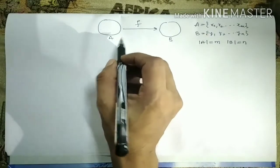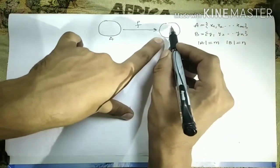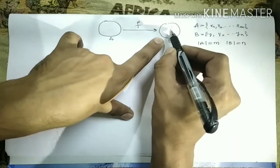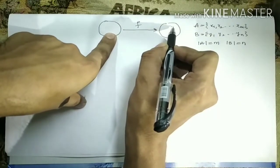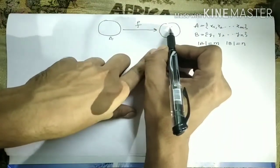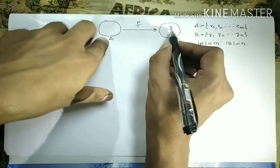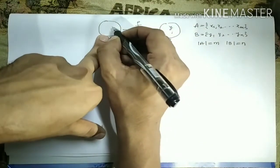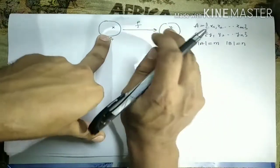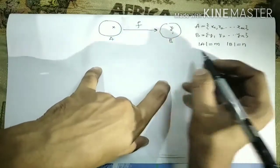Before we go into formulas, let me recall the definitions. A function is 1-1 (injective) if whenever f(x1) equals f(x2), then x1 equals x2 — equal images imply equal pre-images. A function is onto (surjective) if for any arbitrary element y in the codomain, there exists some element x in the domain whose image is y. A bijective function is one that is both 1-1 and onto.